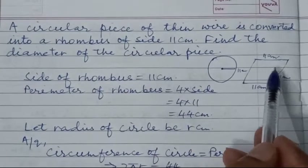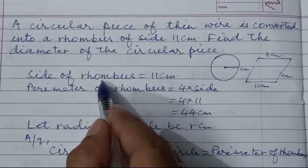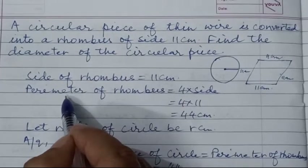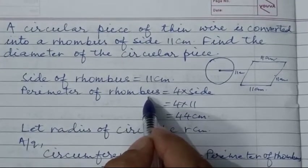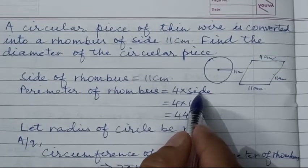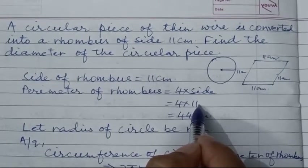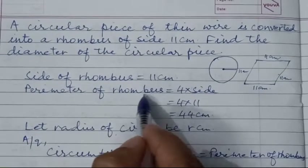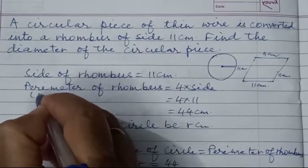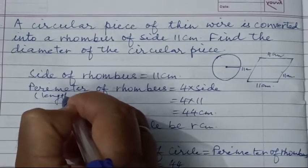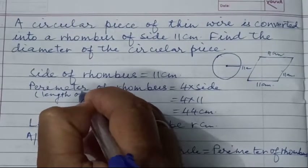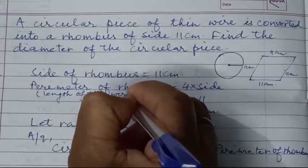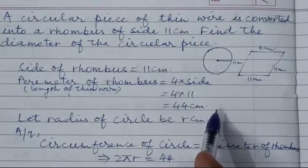Side of rhombus is equal to 11 cm. Perimeter of rhombus = 4 × side = 4 × 11 = 44 cm. This perimeter of the rhombus is essentially the length of the thin wire in rhombus form.